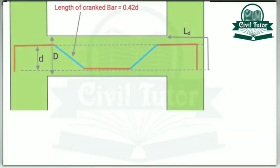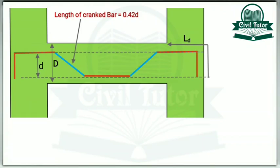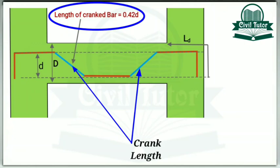To make it clear for you I will illustrate these things with a diagram. Here I have shown a cross section of the beam and these are the two support columns. This length is called development length and is denoted by LD. And this length is called crank length and it can be calculated by using the formula 0.42D